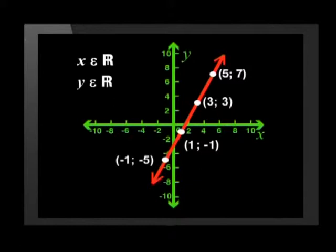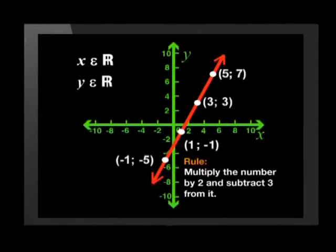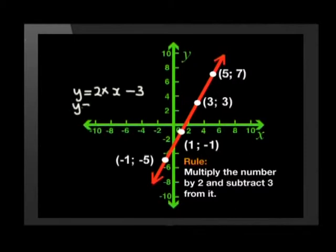Now remember we got all these points on the line by using the rule multiply the number by 2 and subtract 3 from it. So this rule gives us the relationship between x and y as the answer of y is equal to any x value times 2 and then subtract 3. This means y equals 2x minus 3 is your formula for the straight line graph.